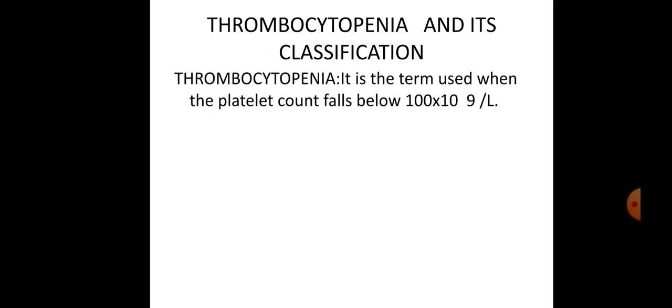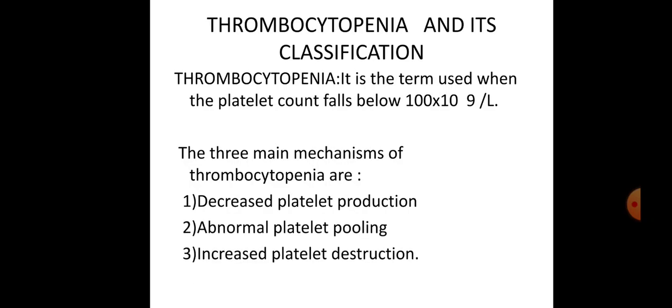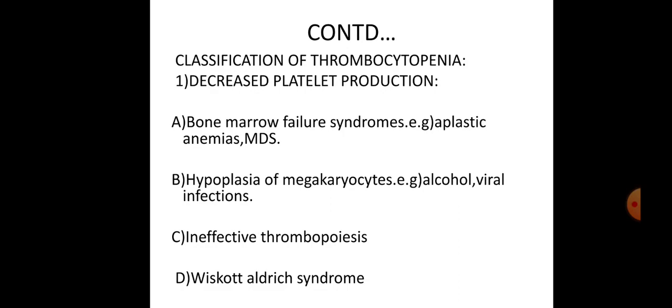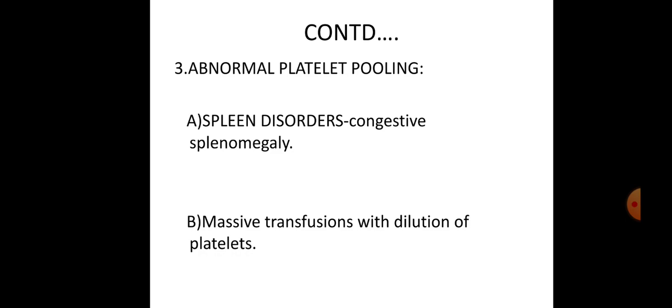Thrombocytopenia and its classification: when the platelet count falls below 100 × 10⁹ per liter, this condition is called thrombocytopenia. There are three mechanisms: decreased platelet production, abnormal platelet pooling, and increased platelet destruction. Decreased platelet production can be seen in bone marrow failure syndromes such as hypoplastic anemia, myelodysplastic syndrome, and conditions involving alcohol, viral infections, or ineffective thrombopoiesis. Increased platelet destruction can be seen in immune and non-immune thrombocytopenic conditions. Abnormal platelet pooling can be seen in splenomegaly and massive transfusions with dilution of platelets.